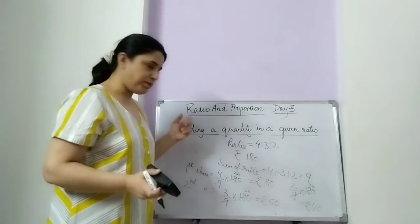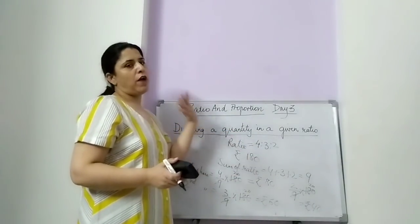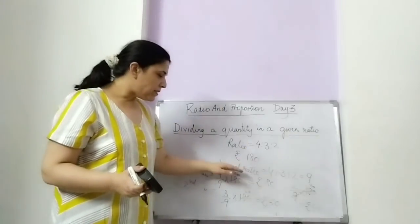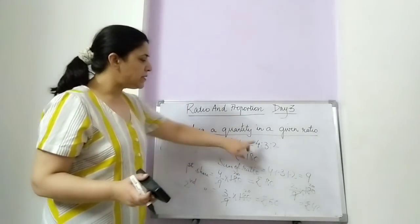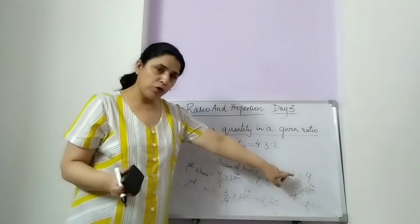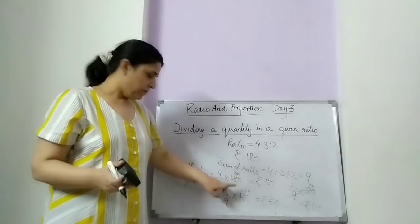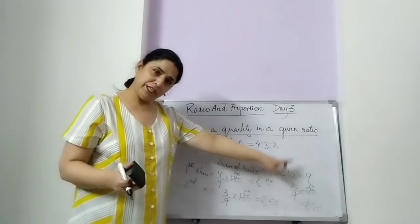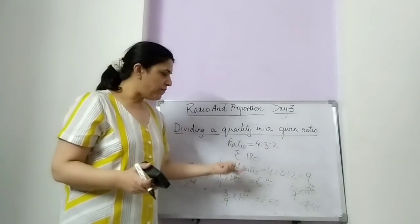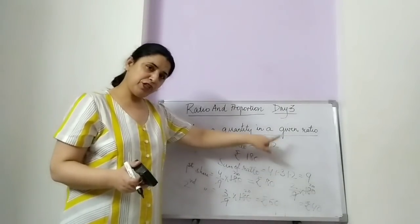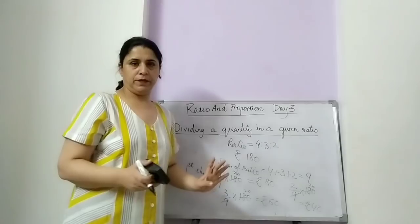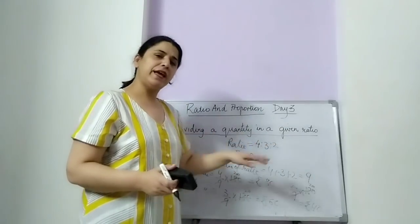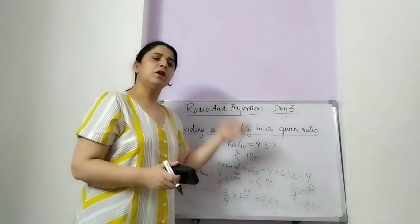What are the steps? I am just repeating. The ratio is given, the quantity is given. You have to divide this quantity in 3 parts in the ratio 4 is to 3 is to 2. We find the sum of ratio. Then the first share is the first term of the ratio divided by the sum, multiplied by the quantity. The second share is the second term of the ratio divided by the sum of the ratio into 180. The third share is 2 — the third term — out of 9 into 180. Both ways are correct: either write 4x plus 3x plus 2x equals 180, find x and substitute, or use the fraction method.